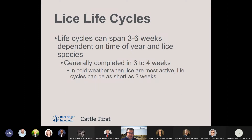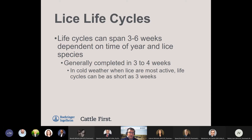Life cycles of lice depend on the time of year and the species. Most life cycles span from three to six weeks — generally three to four weeks — and when they're most active and reproducing in cold weather those life cycles can be as short as three weeks. Unlike internal parasites where some of the life cycle is spent on the ground, the life cycle of lice is always going to be spent on the host, all year long.